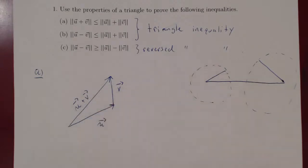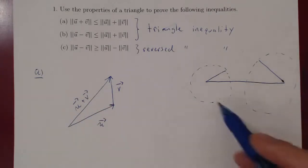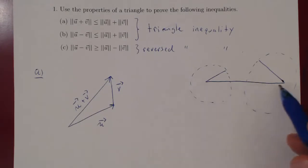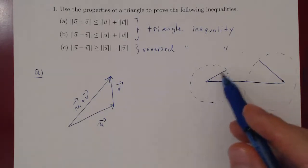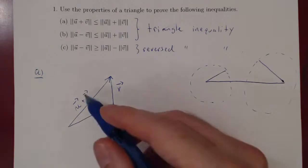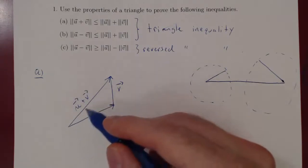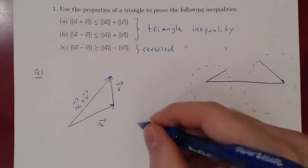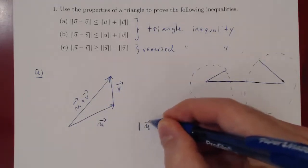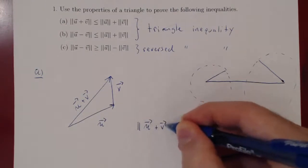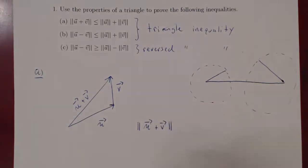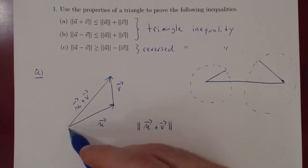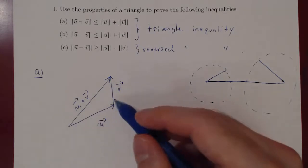So if we look at it this way, actually if we reverse that statement, any given edge cannot exceed the length of the other two edges. So take this edge, the segment u plus v, and the length of u plus v, because we have a triangle, cannot exceed the sum of the two other lengths.